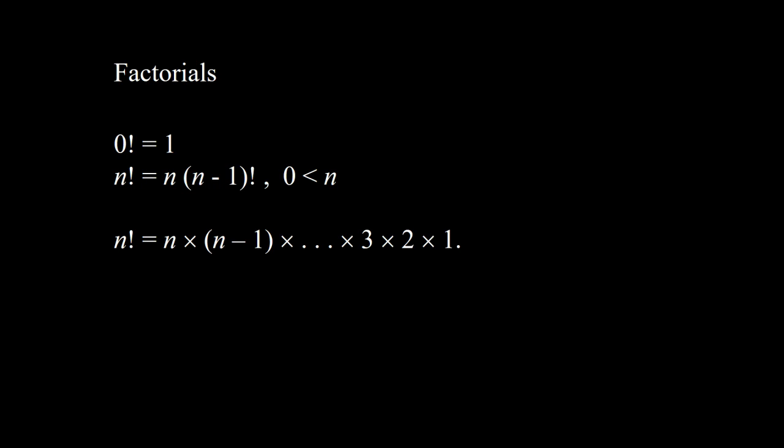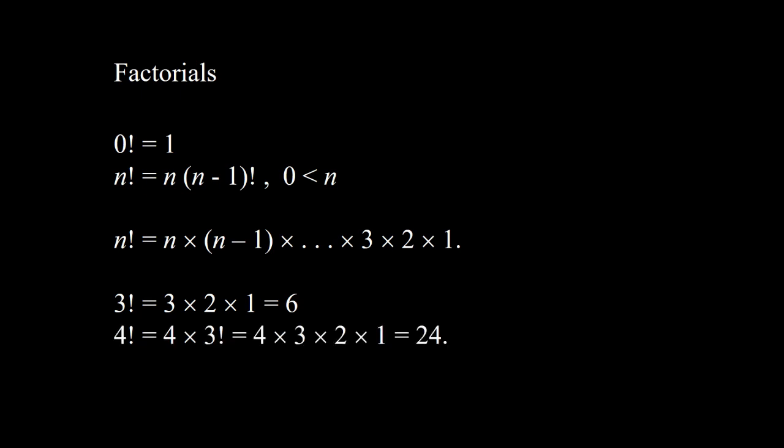For example, 3 factorial is 3 times 2 times 1 which equals 6, and 4 factorial is 4 times 3 factorial, which equals 4 times 3 times 2 times 1, which equals 24.